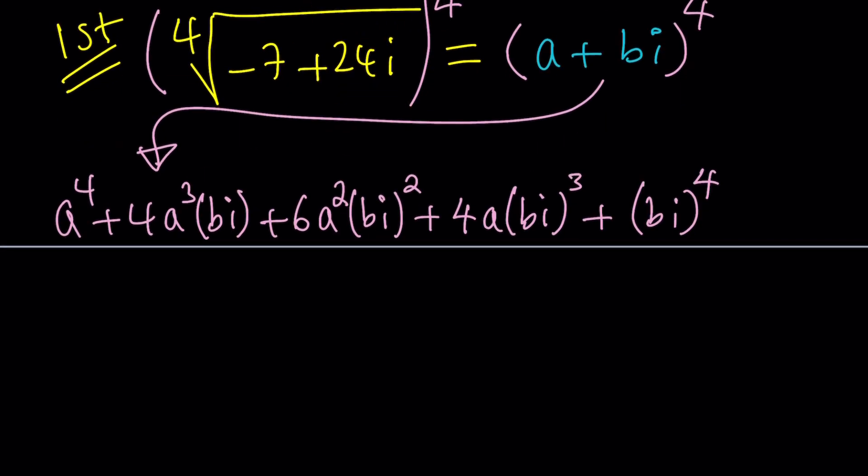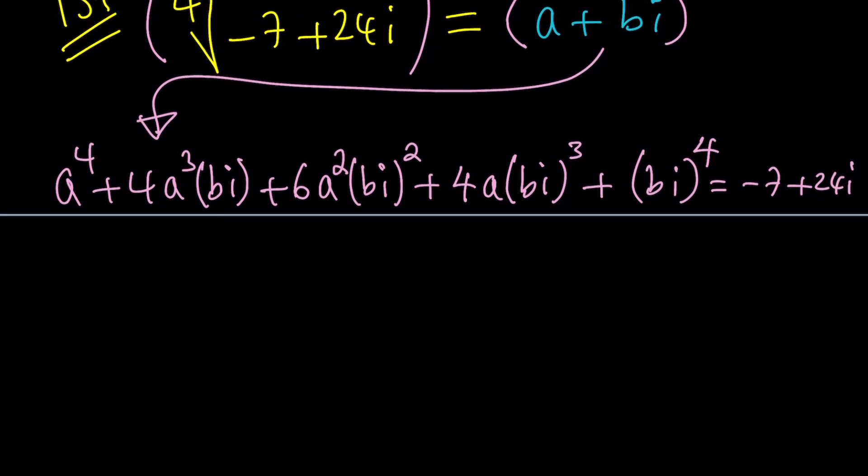And finally we're going to finish with B I to the fourth. And of course this is supposed to equal negative 7 plus 24I which is nice because we're going to get a system of equations. A beautiful system. A quartic system. Now let's see what happens.